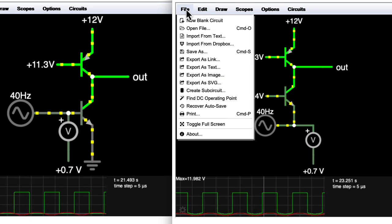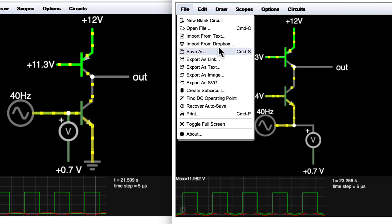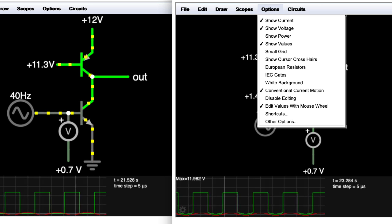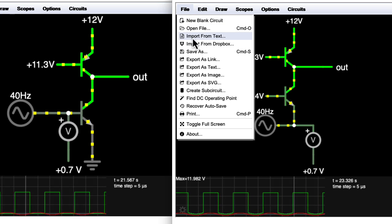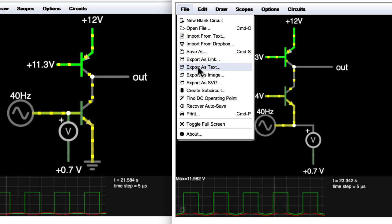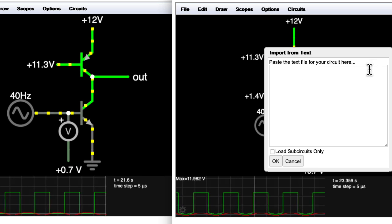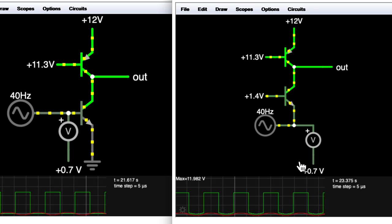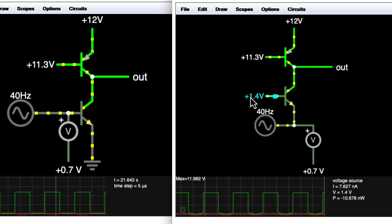Anyway, I used the export as link feature in Falstad, so I'll put some links below. I'll also include the text, so you can actually say import from text, and you'll be able to copy and paste text in case those links ever die, and you can play around with this.